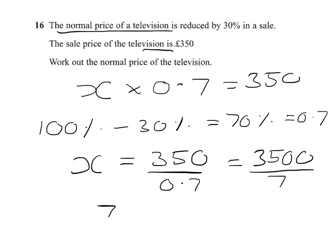So let's write that out as a kind of long division, so 7 into 3,500. Now 7 doesn't go into 3, 7 goes into 35 five times, and then 7 doesn't go into 0, and it doesn't go into 0, so you write your 2 noughts.